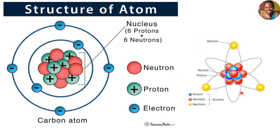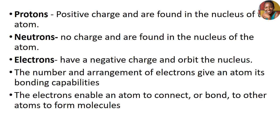This structure generates what we call energies, and those energies are very important when it comes to chemical bonding. The protons are positively charged and are found in the nucleus. Neutrons do not have a charge and are also found in the nucleus. Electrons have a negative charge and are found in the orbit. The number and arrangement of electrons give our atom its bonding capabilities.